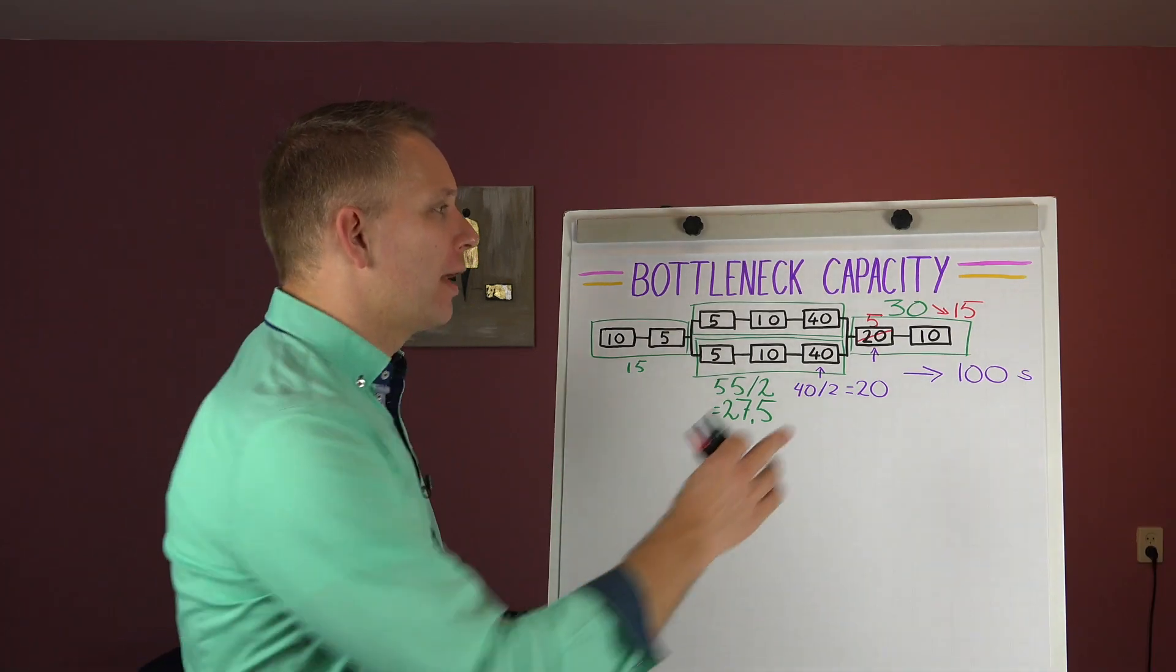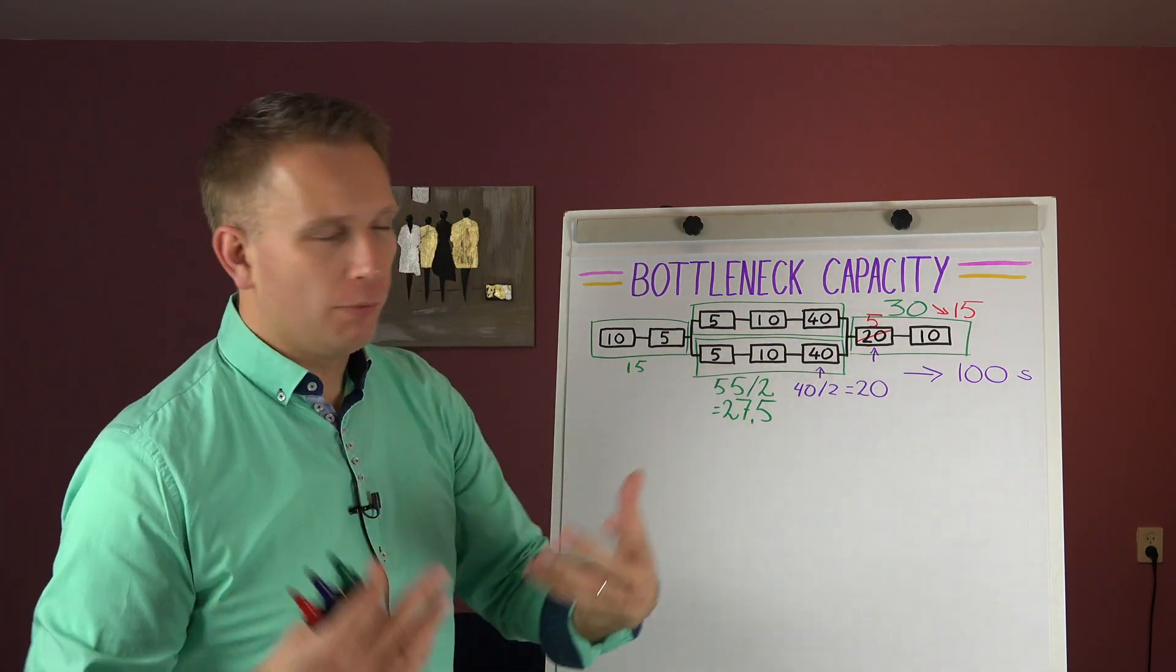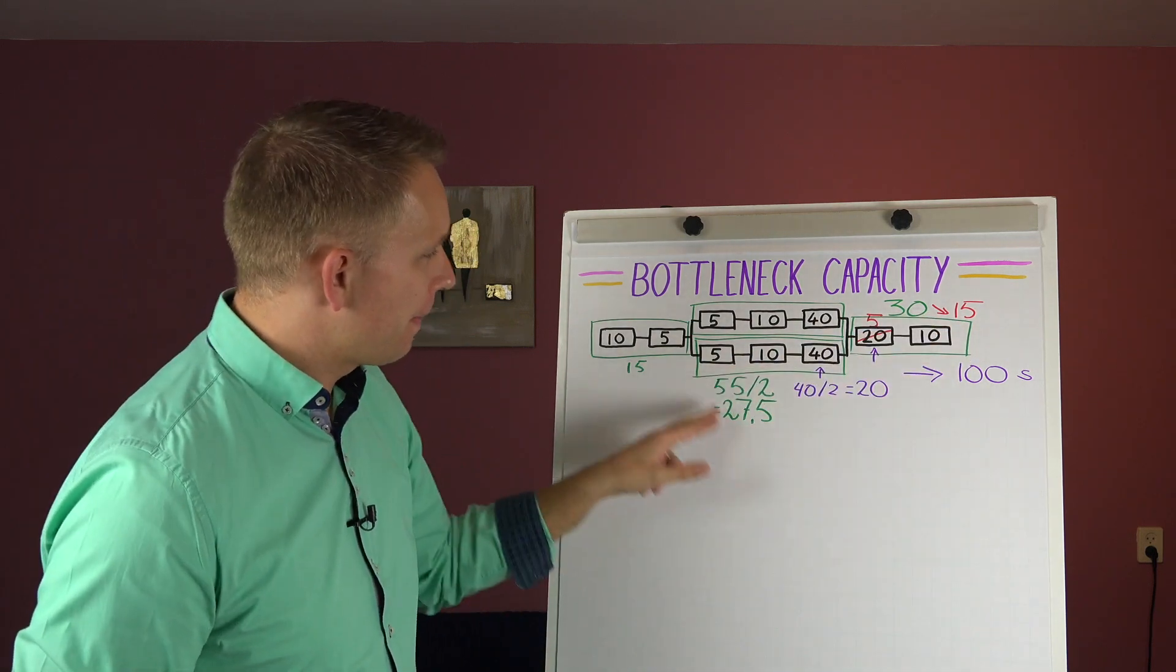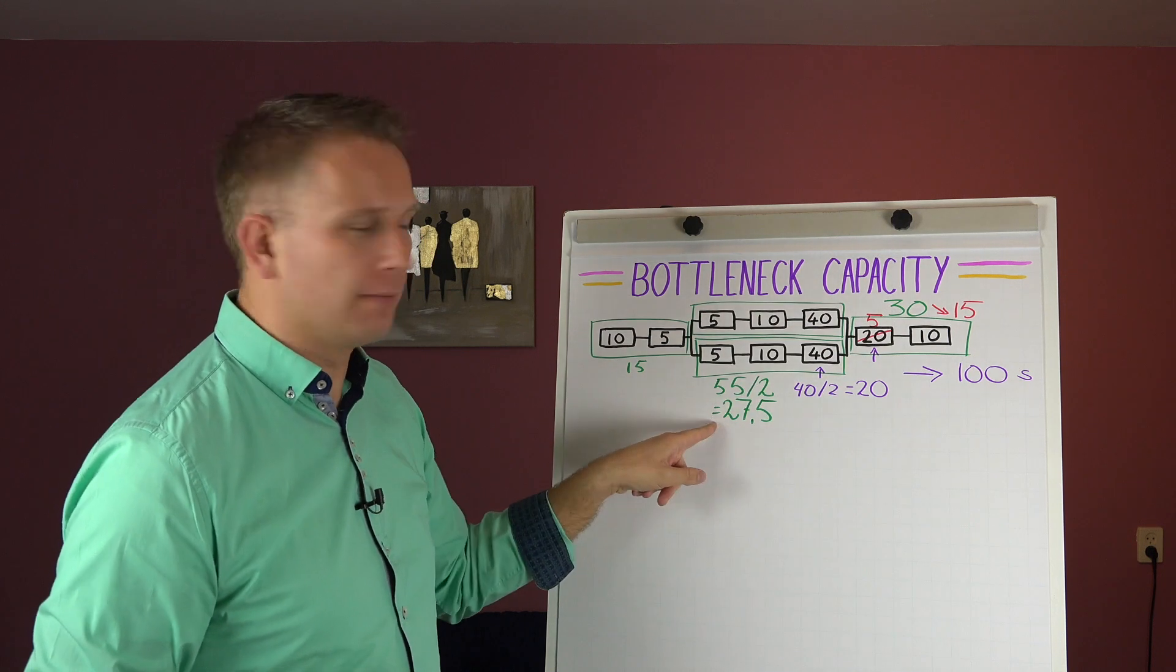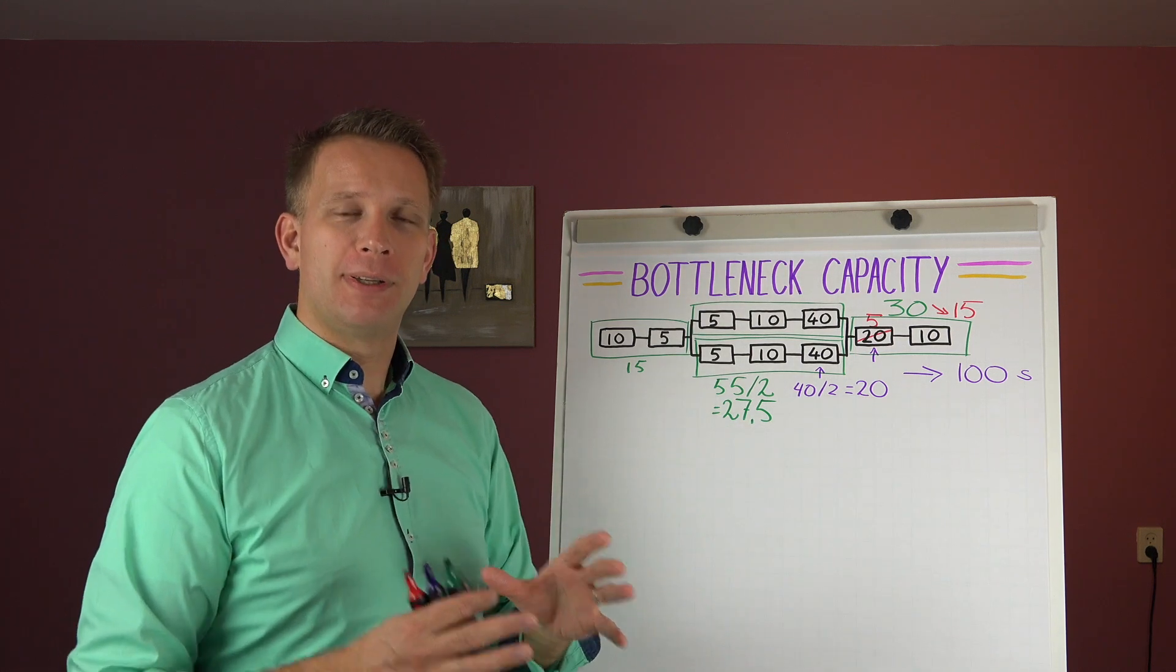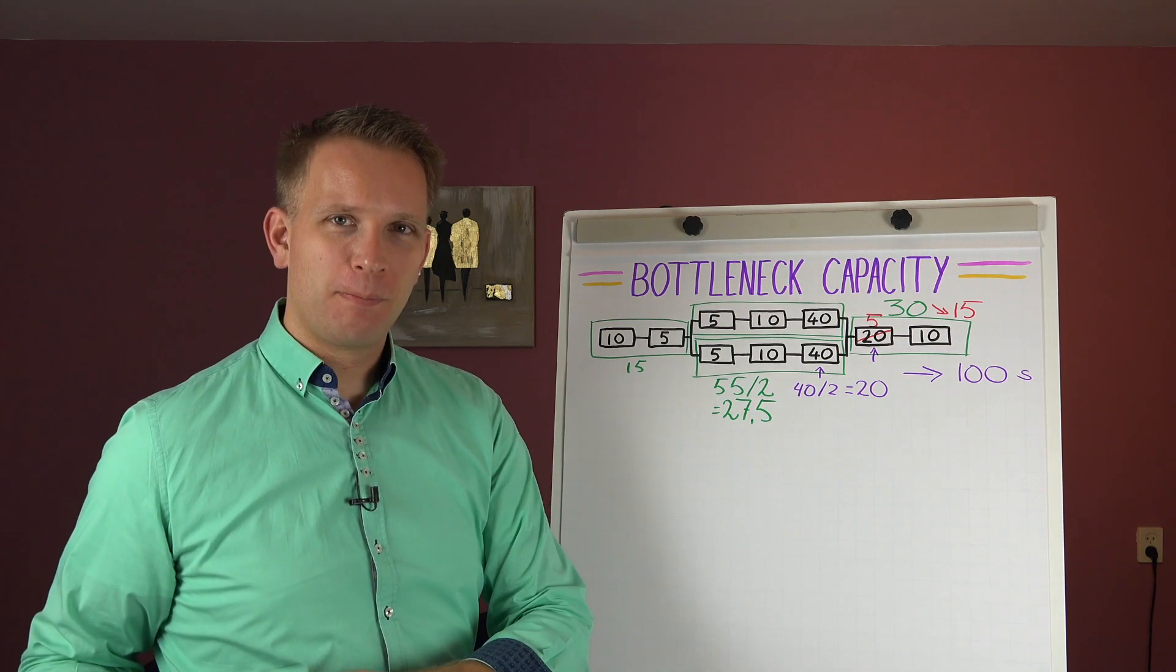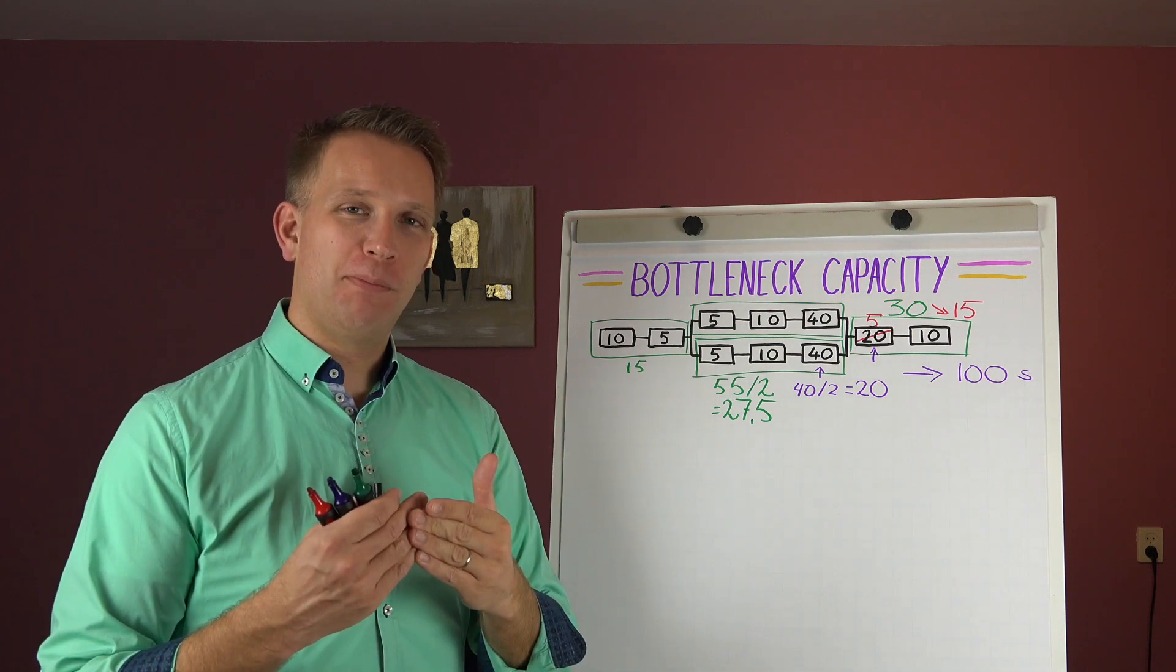And that is because this may have gone to 15 seconds, so four drinks per minute. But this part, the middle part of the system, is still at 27 and a half. So we hardly improved the total process. But we did now shift a bottleneck.